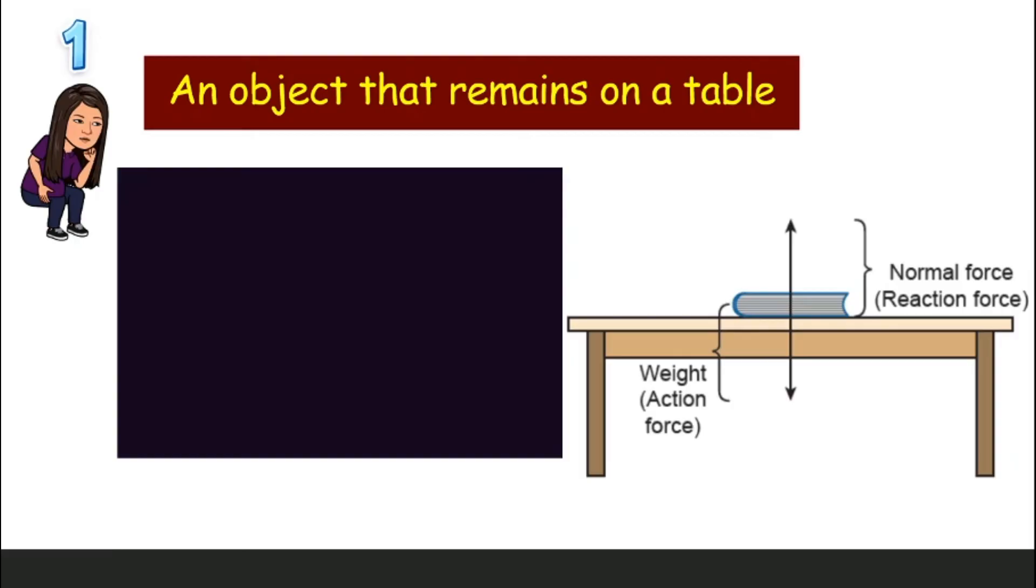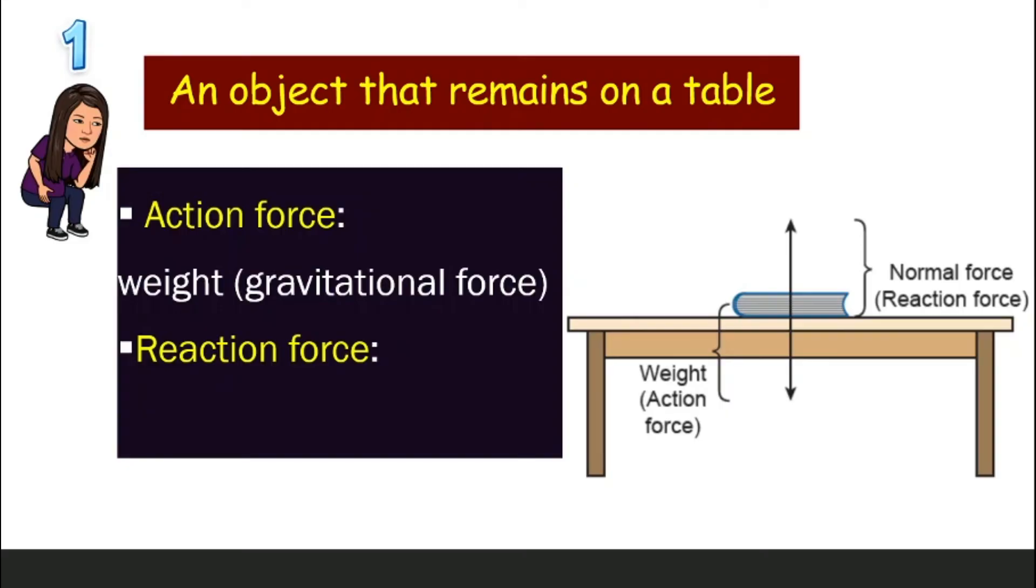Let's look at a few situations. First situation. If there is an object that remains on a table that does not move, what is the action force? The action force is the weight of this object. In this case, a book. That is the action force. The weight. Weight actually is gravitational force acting on the object. Remember? How about the reaction force? This is where it will help you understand better. The reaction force is normal force.